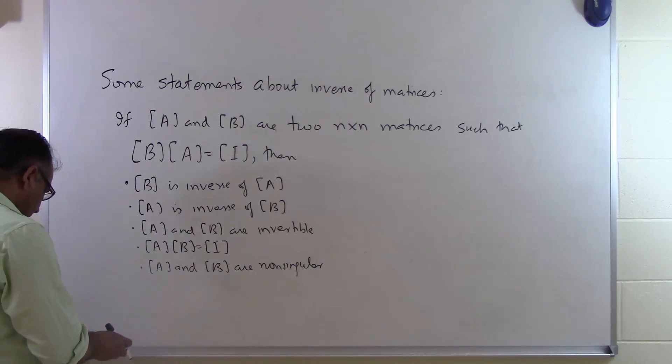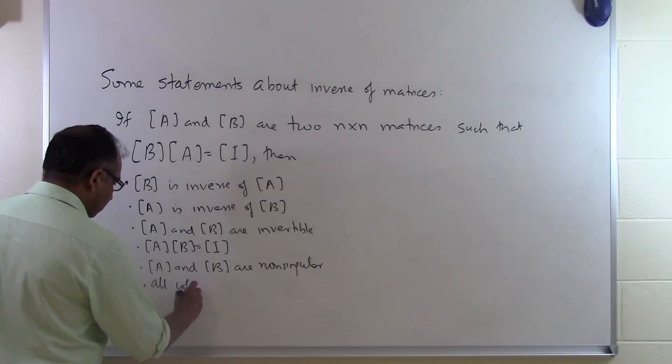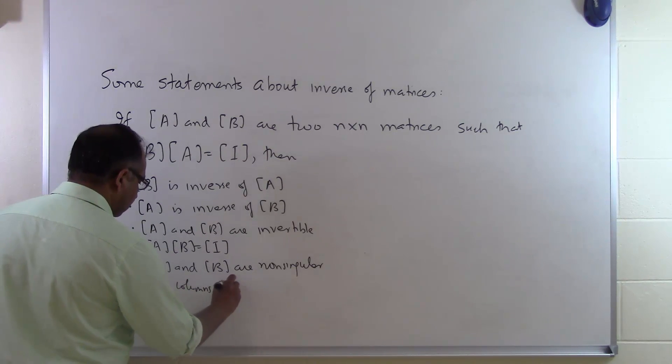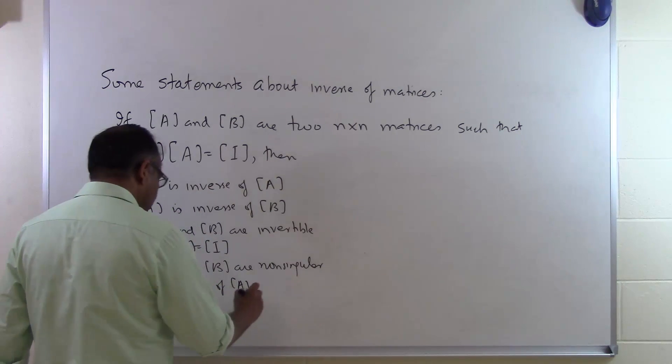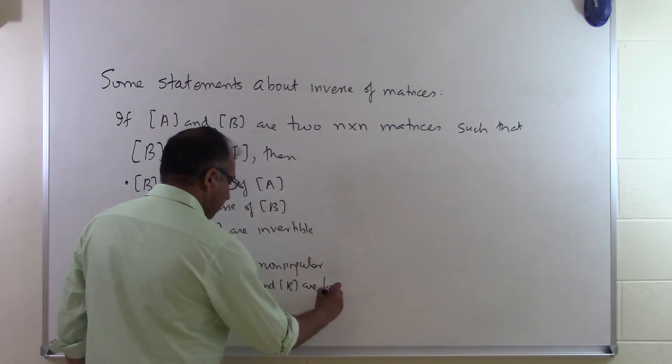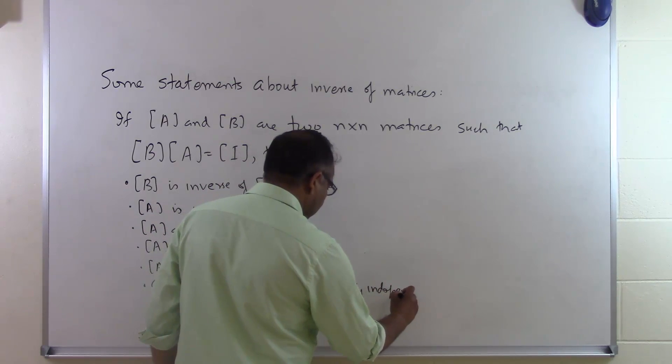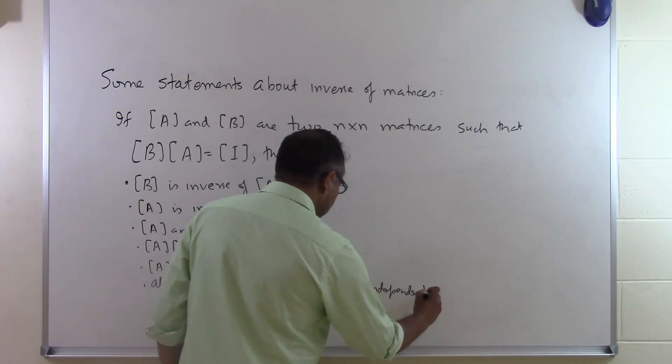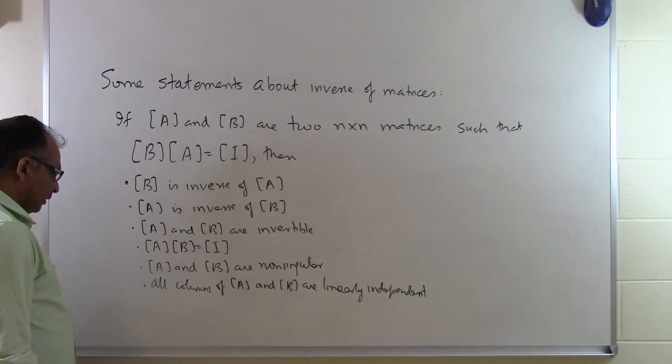And then we can also say that all columns of A and B are linearly independent. So if we treat each of the columns of A or B as vectors, they will be linearly independent.